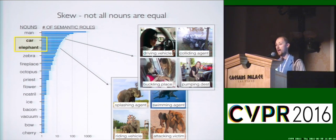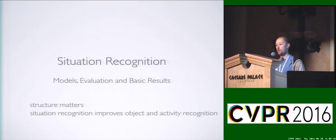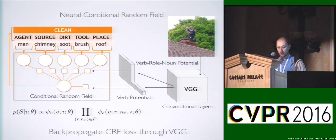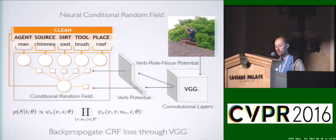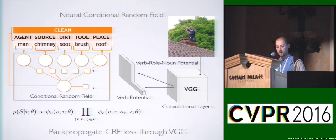Now that we have this dataset, the basic question is how do we actually predict these structures. I'll show the first models for situation recognition and show that structured prediction is an important factor, and that situation recognition can improve object and activity recognition. The basic idea behind our model is to combine deep convolutional neural networks with structured prediction. We take a deep network — VGG — put an image through it, and use it to produce potential values in a conditional random field that decomposes under verbs, roles, and nouns together, and then back-propagate CRF likelihood to the convolutional layers.